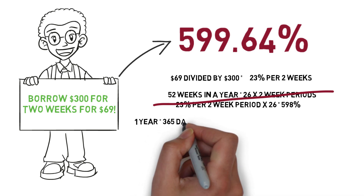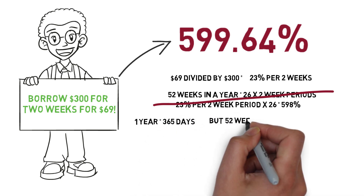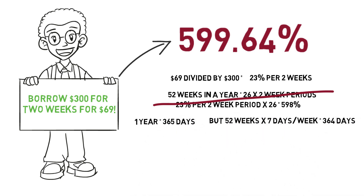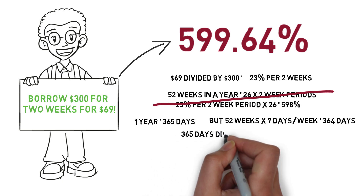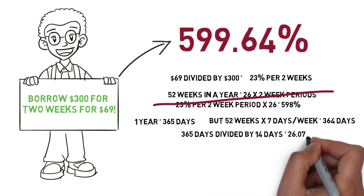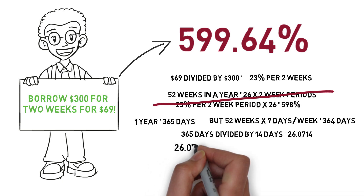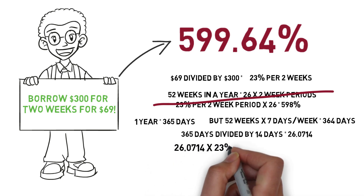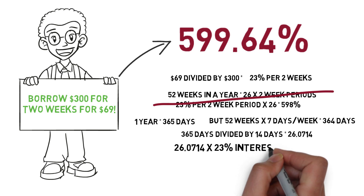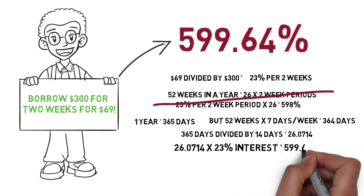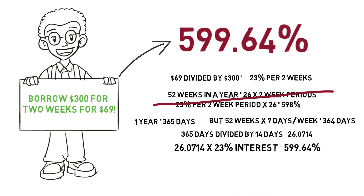Non-leap years have 365 days, but note that 52 weeks multiplied by 7 days per week is only 364. So the exact formula requires using a more precise number. To figure out how many two-week periods there are in a year, we divide 365 days by 14 days to get 26.0714. We then multiply this by the interest rate per two weeks of 23% to get a simple annual percentage rate of 599.64%.